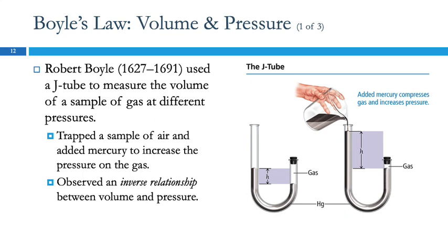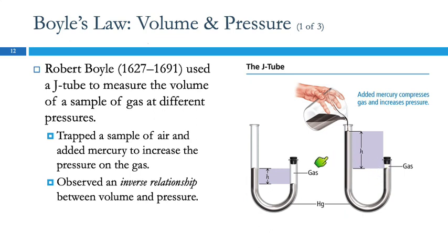Here, is the gas pressure higher or lower than atmospheric pressure? It's higher, because it's pushing down on the mercury and causing the other side to go up. You can think of this like two people having a pushing contest — they're both pushing, and who's winning? This one's winning because this side is lower than the other. So he could measure the volume and the pressure of a gas. He kept the temperature and number of moles constant, and then he would change the pressure by adding mercury to the open end.